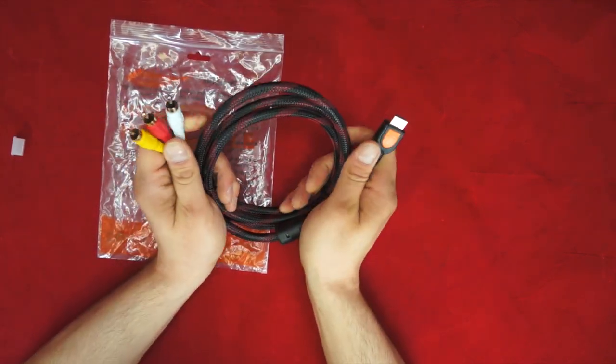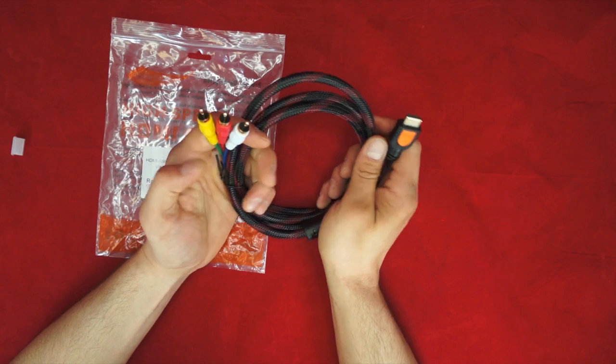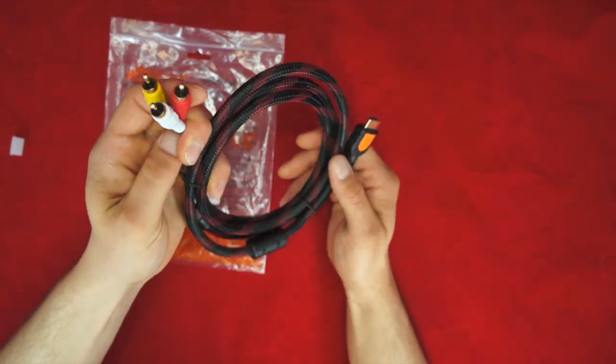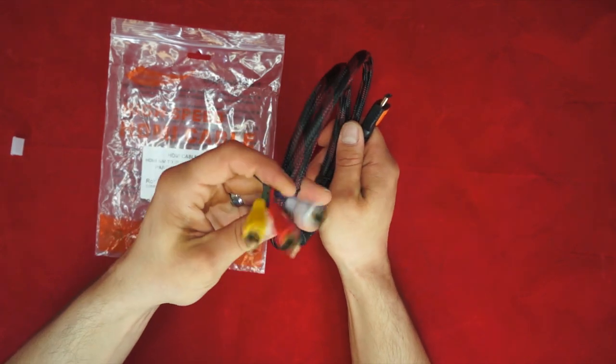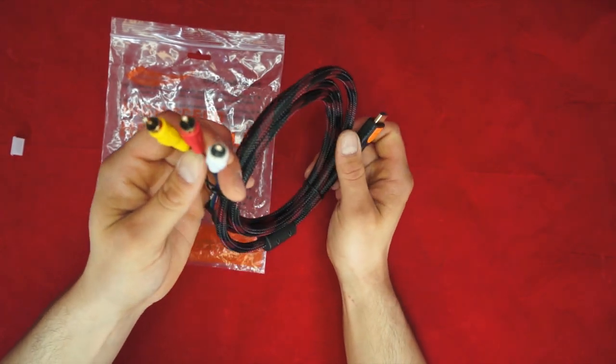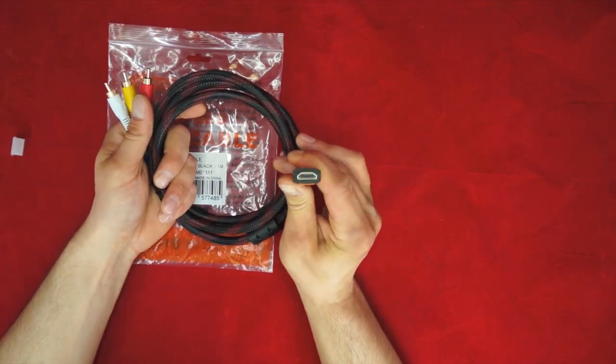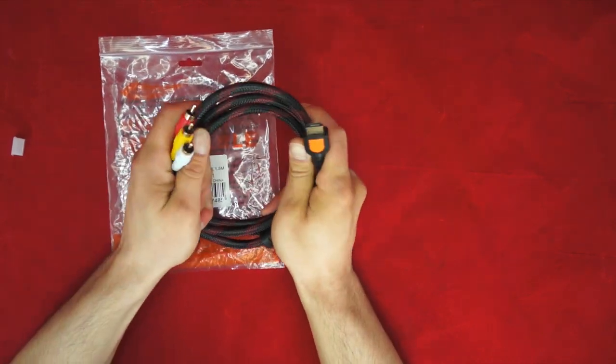Really, the only real situation this would work in is if you have a VCR or some type of older analog system, an old VCR, an older DVD player with RCA inputs or something like that, and you have a newer TV that has HDMI in. That's really the only situation that's going to work.